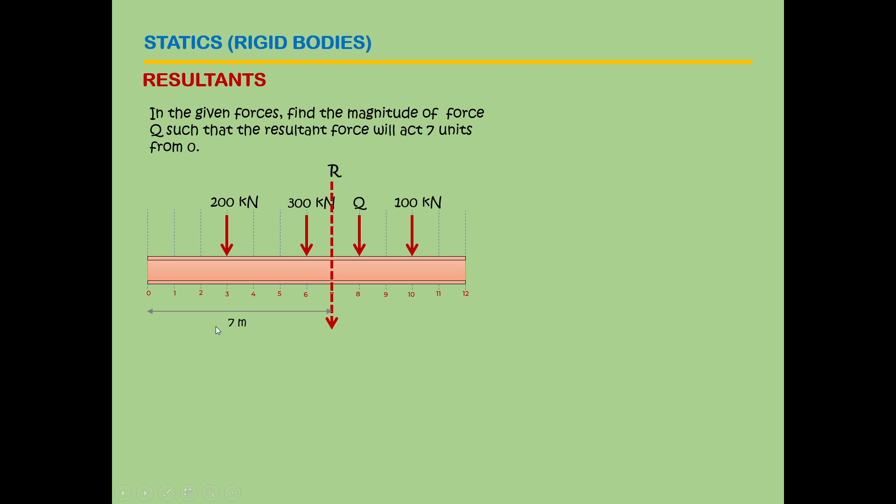Seven meters. So what is the resultant? Summation of forces vertical, or along y, that is the value of your resultant. So P1, P2, Q, and then P3. So our resultant is 600 plus Q in terms of kilonewton.